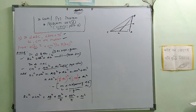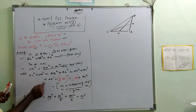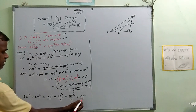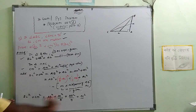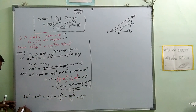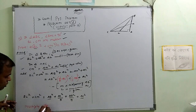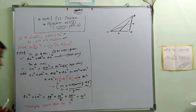Now we will take the LCM and multiply the whole equation by 4. So 4 times BL² plus 4 times CM² on the left side.